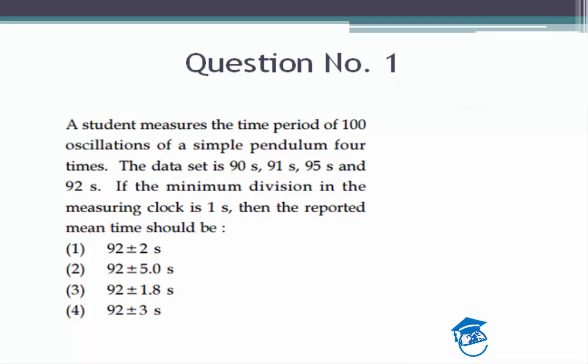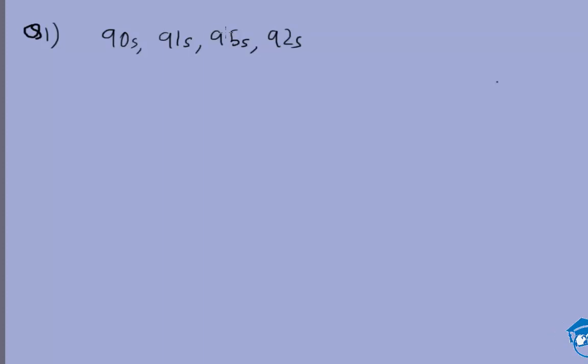So how should the reported mean time be written? It's given that the minimum division is one second. That's why you don't have 90.5 seconds or anything, because the minimum division in the measuring clock is one second.